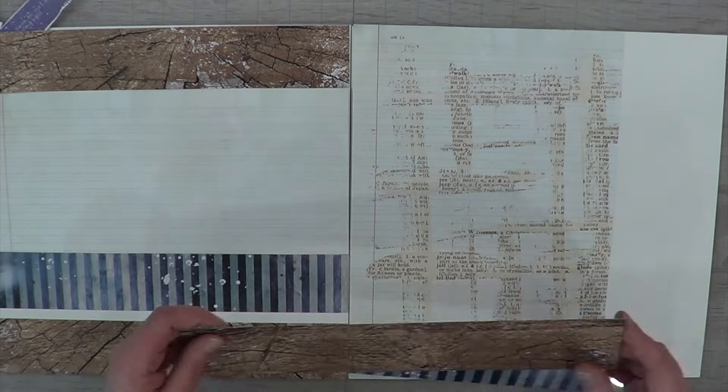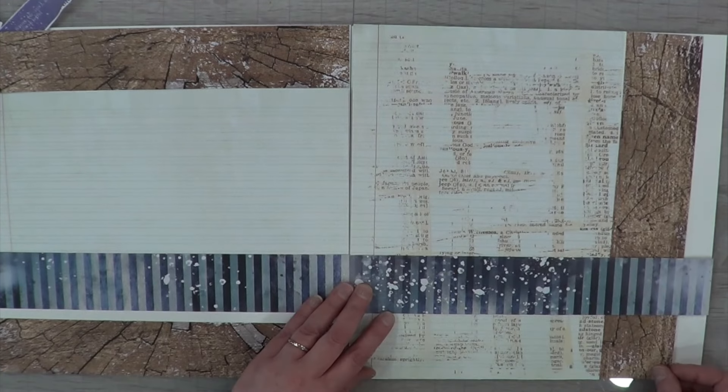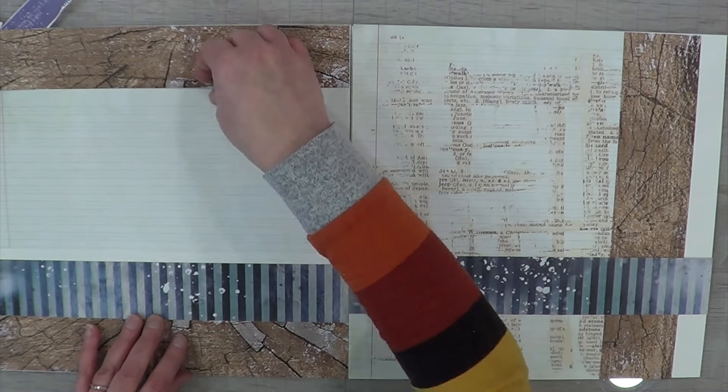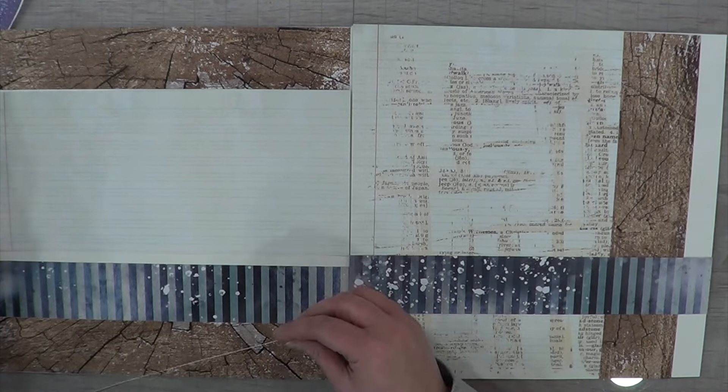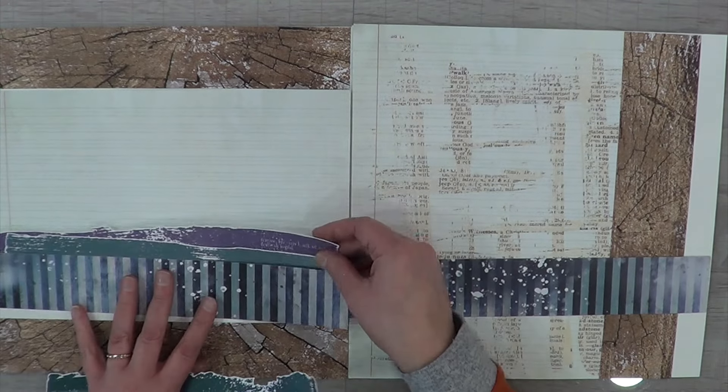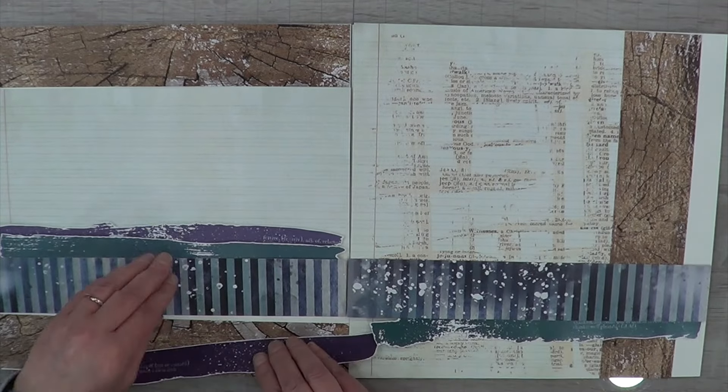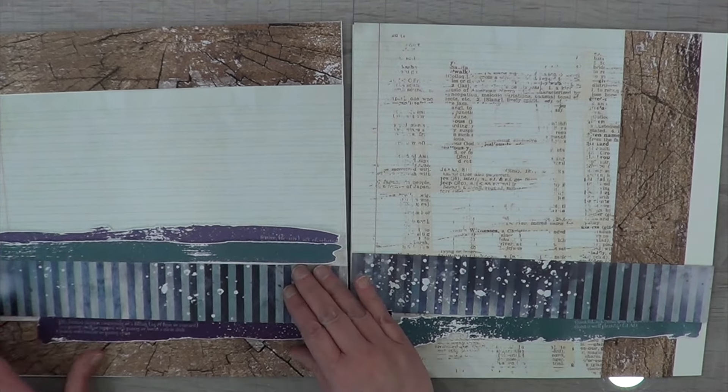So here's where I realize I shortchanged myself on one of my blue pieces or I'm sorry on one of my wood grain pieces, but it's okay I can figure it all out. It ends up beautiful in the end. I decided that that is going to be a perfect spot for where my paint swatches are going to go.